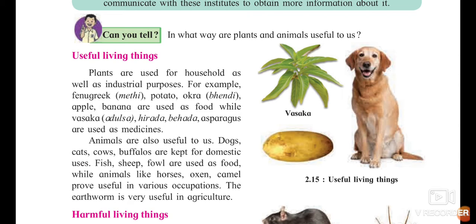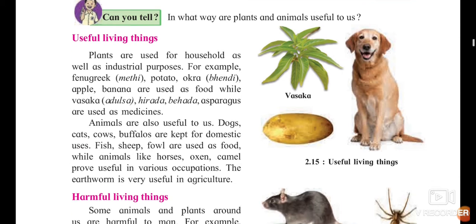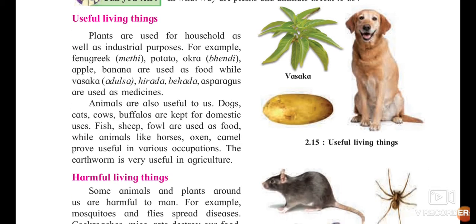Fenugreek, methi, potato, bendi, apple, and banana are used as food. Animals are also useful to us — you can find many examples. Animals are always useful for us.